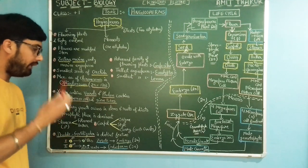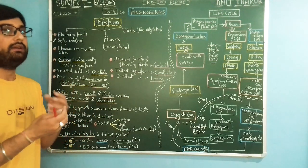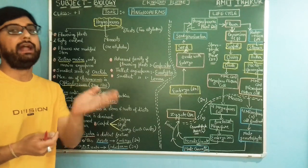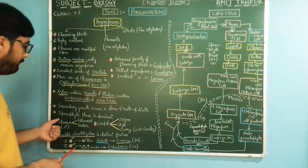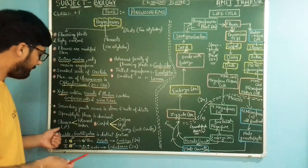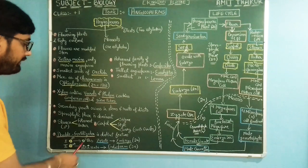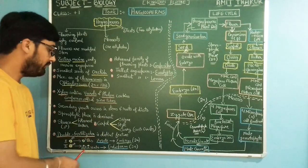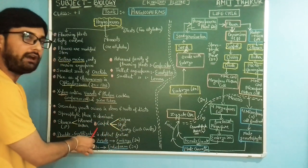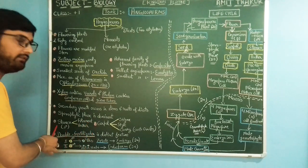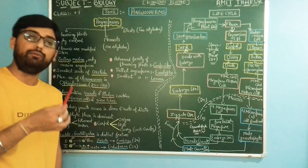The flower is the reproductive body of angiospermic plants and contains both male and female reproductive parts. The male reproductive structure, collectively known as the stamen, contains two parts: the filament and the anther. The carpel is the female reproductive part and contains three parts: the stigma, style, and ovary. The ovary contains ovules.